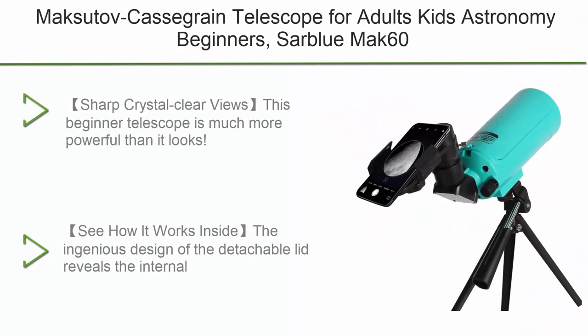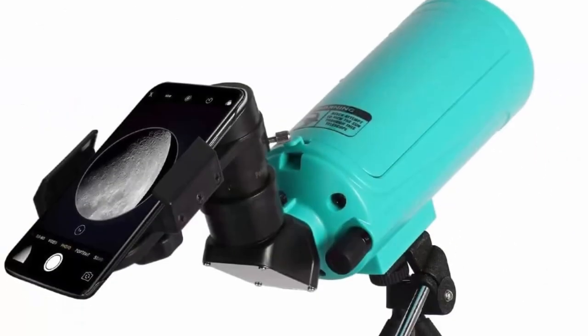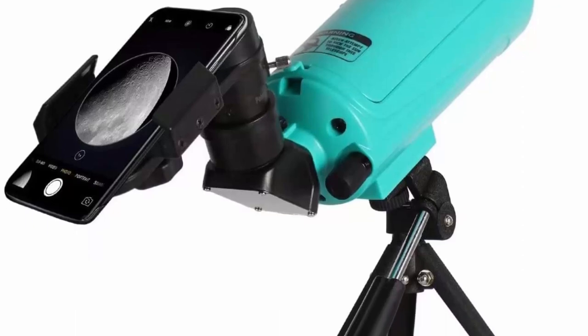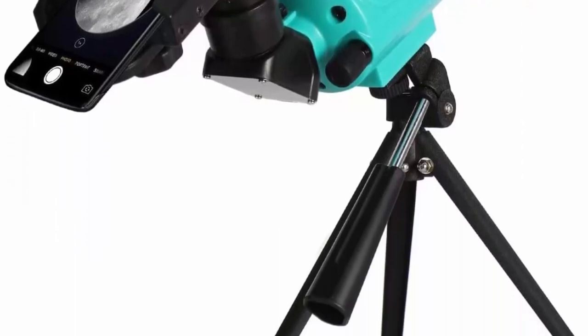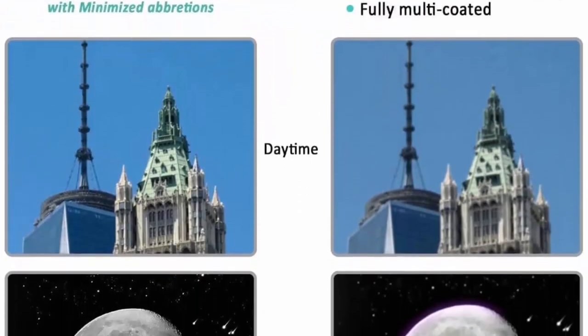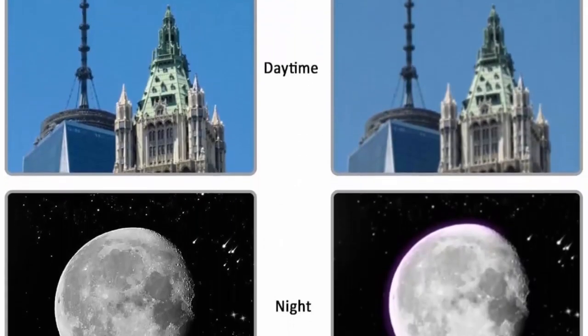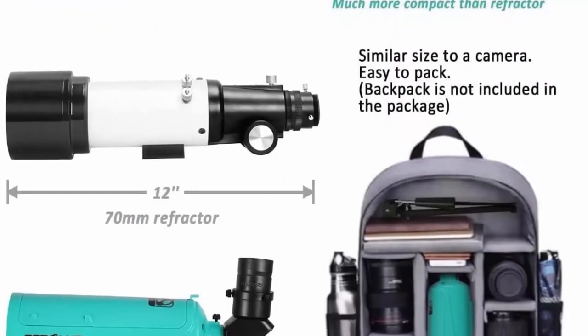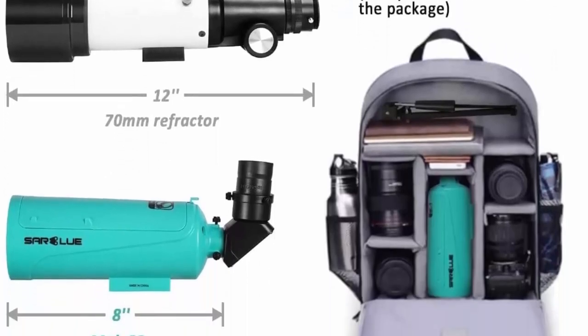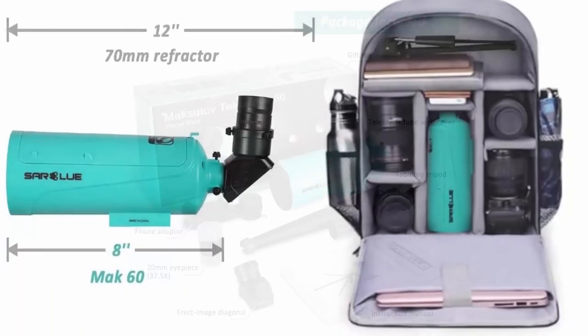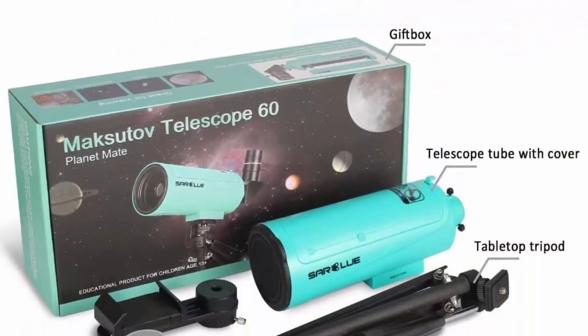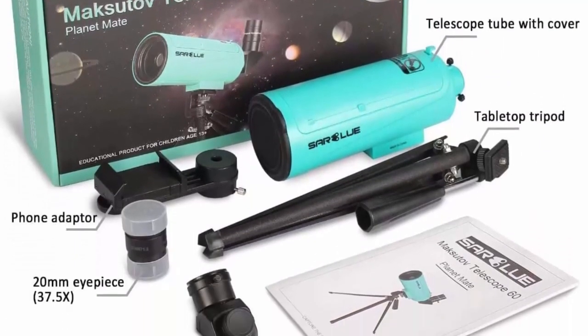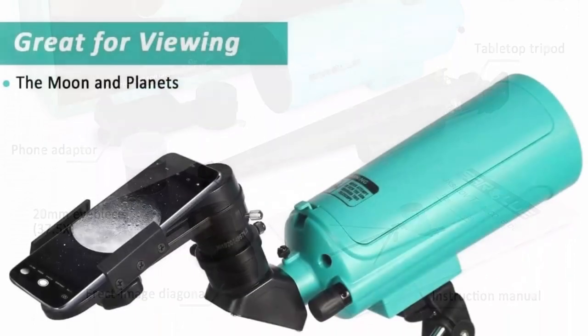Top 4. Maksutov Cassegrain Telescope for Adults, Kids, Astronomy Beginners. SARBLUE MAX 60 Catadioptric Compound Telescope 750x60mm Compact Portable Travel Telescope with Tabletop Tripod, Phone Adapter. Sharp Crystal Clear Views. This beginner telescope is much more powerful than it looks. Thanks to its Maksutov Cassegrain design, high precision fully multi-coated optical glass lens, both spherical and chromatic aberrations are minimized. It not only delivers vivid high contrast images for daytime viewing, such as birds and wildlife, but also enables astronomical exploration, including Saturn, Jupiter, craters on the moon, etc.